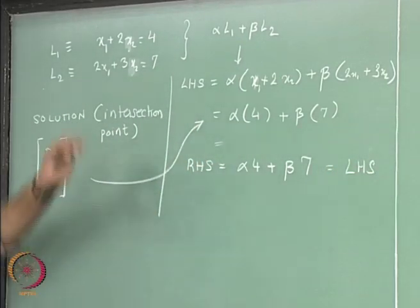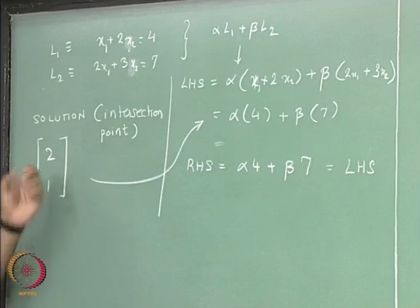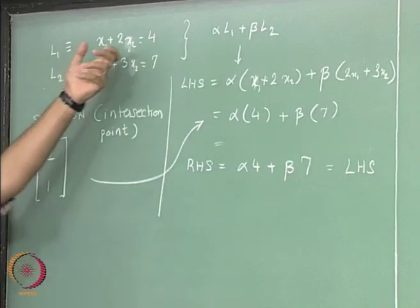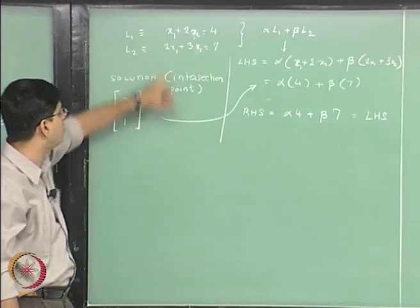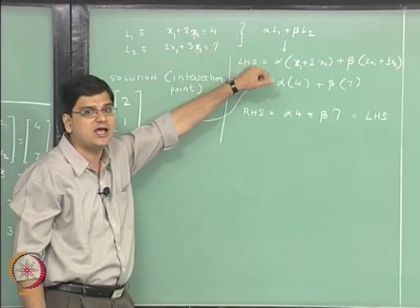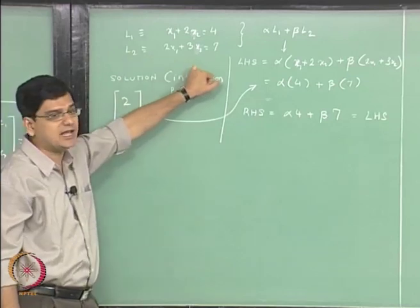So the right hand side of alpha L1 plus beta L2 is going to be alpha times 4 plus beta times 7, which is the same as the LHS. So what does it mean? What it means is that the point 2 comma 1 satisfies the equation L1 and it satisfies the equation L2, that means this particular point lies on the line L1 as well as it lies on the line L2.